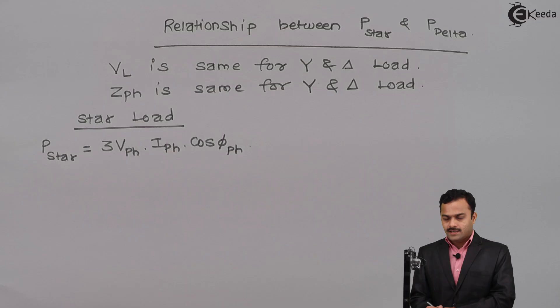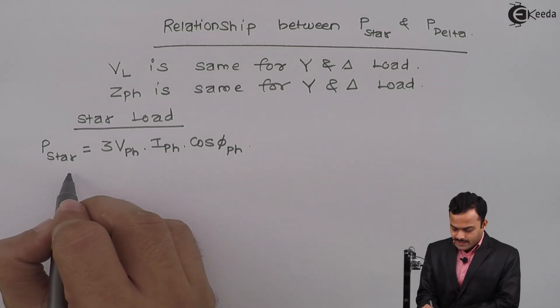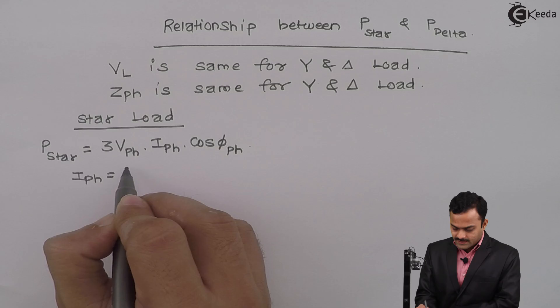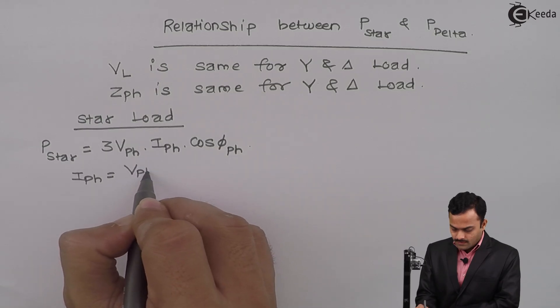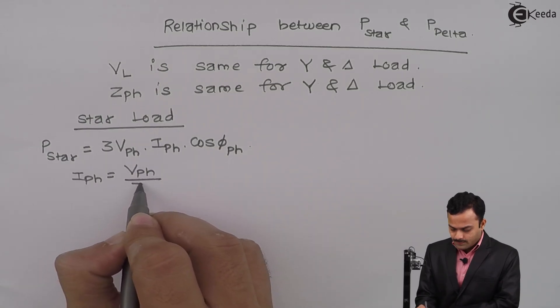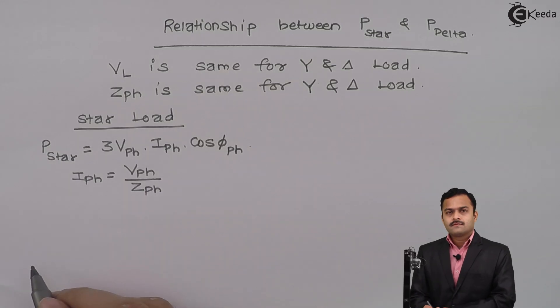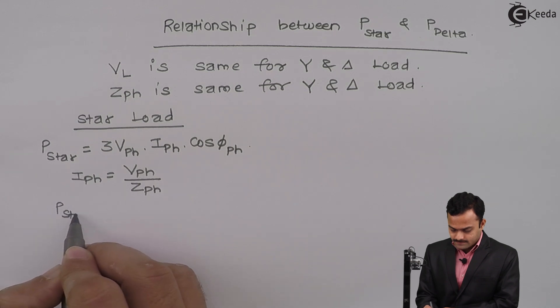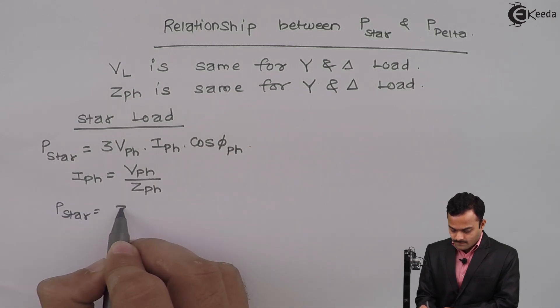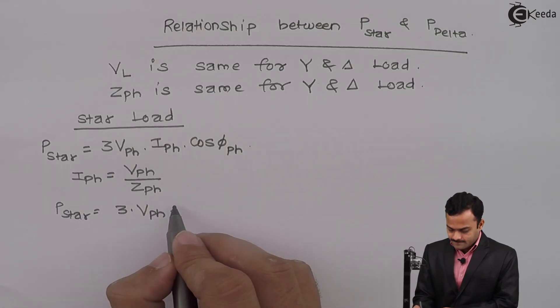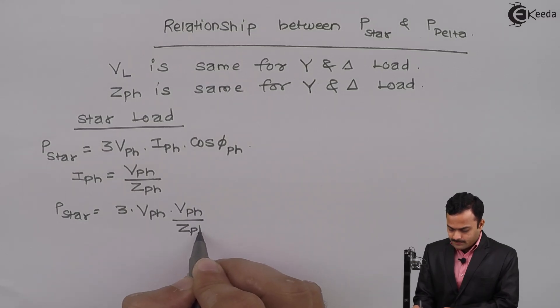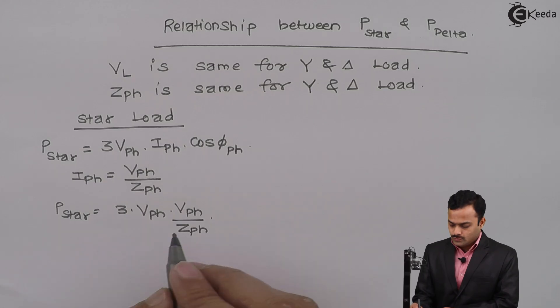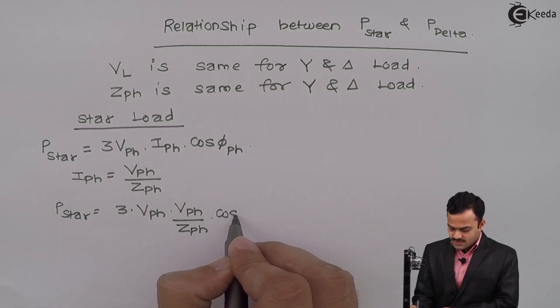Now over here, IPH is nothing but VPH upon ZPH. So if I substitute this, I will get P star as 3 VPH multiplied by VPH divided by ZPH into cos phi PH.